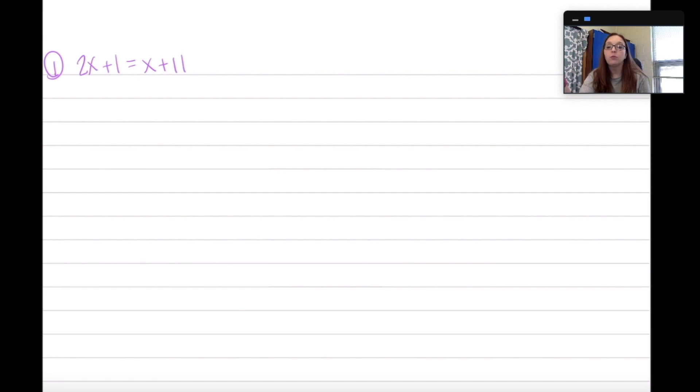So we have variables on both sides. I have the 2x on the left and the x on the right. When you're solving these types of equations, your goal is to get the variables all together on one side. First, I like to look and see, do I have anything on the left side that can be combined? Can the 2x plus 1 be combined? No, they're not like terms. How about on the right side? Can the x plus 11 be combined? No, they're not like terms either.